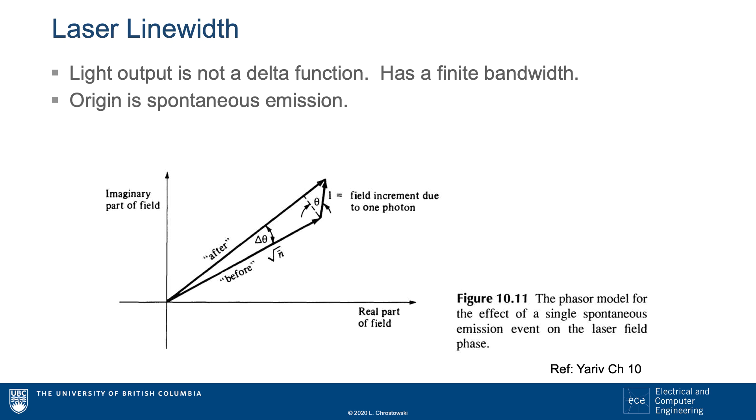This causes variations in the position of the laser electric field vector. This leads to a phase variation, which in turn means that the frequency of the laser varies, and thus there is a linewidth.